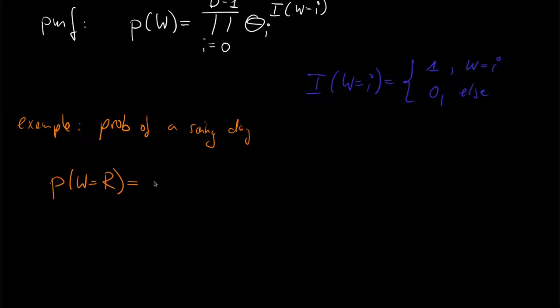And we then have the probability of the weather being rainy is the product. And so we do first theta 0, and theta 0 was 0.2, and we raise it to the indicator of, and the weather of raininess is 1. But the state to 0.2 probability is 0, the cloudy state, times 0.3 for the second, or for the first state, as the rainy state. And we raise it to the indicator of 1 equals 1, times 0.5 raised to the indicator of 1 equals 2.